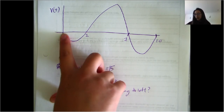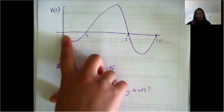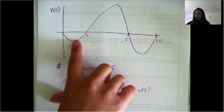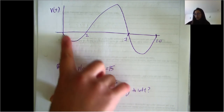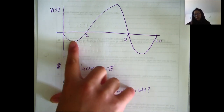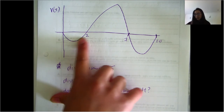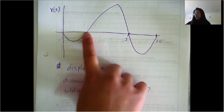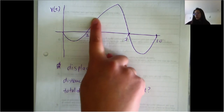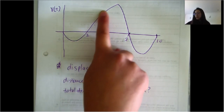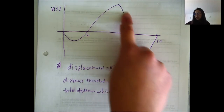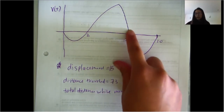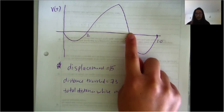For example, over here it's going in a leftward direction and it goes faster and faster. Then it slows down, goes to zero, turns around, and then it goes right — faster and faster. Then it slows down and stops.